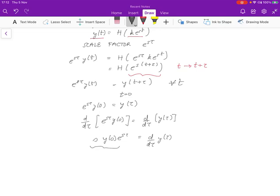And we can substitute on the left-hand side. It's just nothing more than s y(0) e^(sτ). And on the right-hand side, it's going to be d/dτ y(τ). But this function over here, e^(sτ) y(0), not that part over here—I made a mistake—but this part over here, we just said that that's y(τ). We just showed that in the previous step. So we can substitute for that, and we get s y(τ) equals d/dτ y(τ).